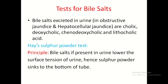Test for bile salts — bile salts are excreted in urine in case of obstructive and hepatocellular jaundice. Names of bile salts: cholic acid, deoxycholic acid, chenodeoxycholic acid, and lithocholic acid. Test for bile salts: sulfur powder test. Principle: bile salts, if present in urine, lower the surface tension of urine, and hence sulfur powder sinks to the bottom of the tube.